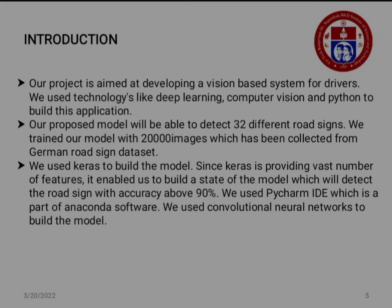Our project is aimed at developing a vision-based system for drivers. We use technologies like deep learning, computer vision, and Python to build this. Our project model will be able to identify 32 different signs, and we used a database of 20,000-plus images collected from German road signs. We used Keras to build the model, which provides a vast number of features, enabling us to build a state-of-the-art model that detects road signs with an accuracy of 90 percent. We used PyCharm IDE, which is part of the Anaconda software.